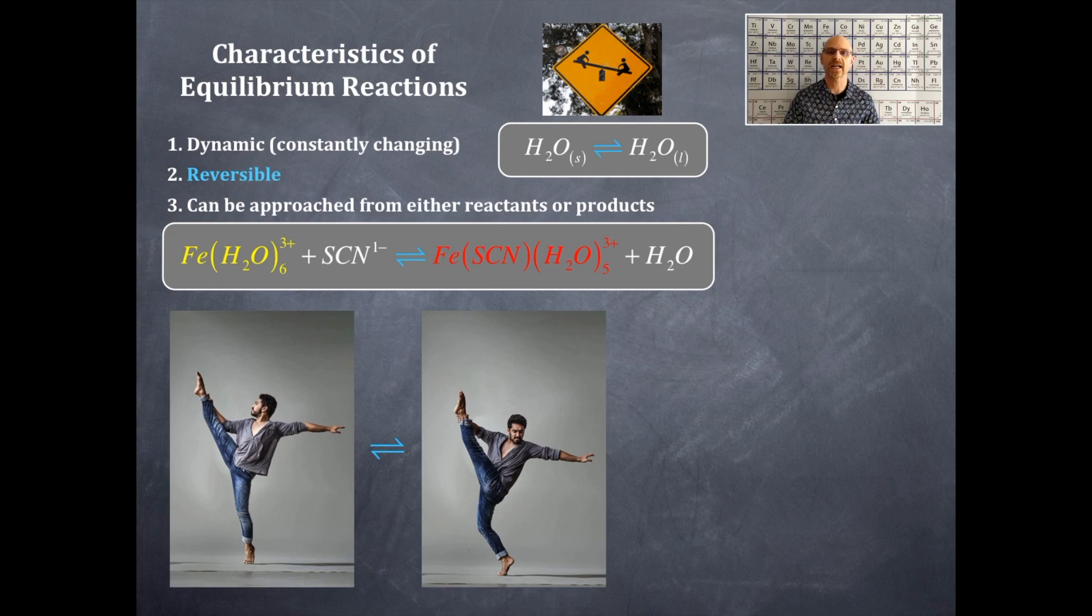So you can approach this from either the reacting side or the product side, but you can most certainly change the equilibrium. There are various different states that he can have that will make a balancing on his tippy toes. So think about it that way. It's dynamic. It's changing. It's reversible. You can approach it from either the reactants or the products.